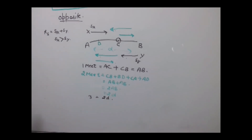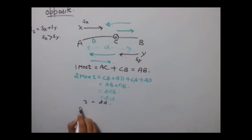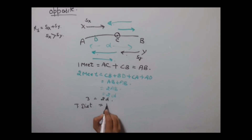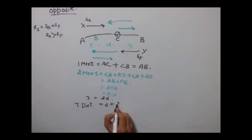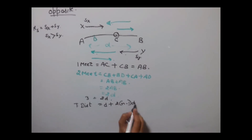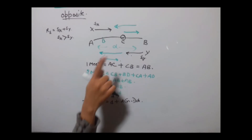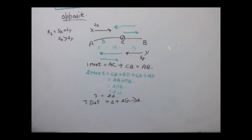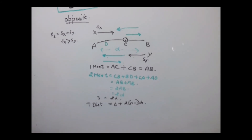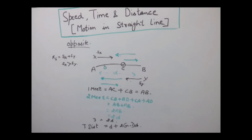The formula in this case for total distance becomes: D + 2 × (N − 1) × D. This is because in the first meeting both objects together cover a single distance D, and in each successive meeting the combined distance is twice D. Now let's see some examples based on this.